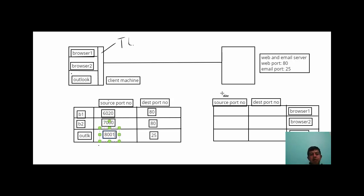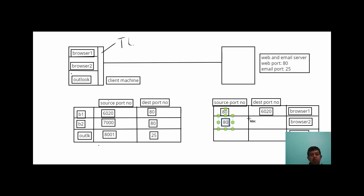When responses come back from the server, for browser one: source port is 80, destination port is 6020. For browser two: source port is 80, destination port is 7000. For the Outlook application: source port is 25, destination port is 8001.